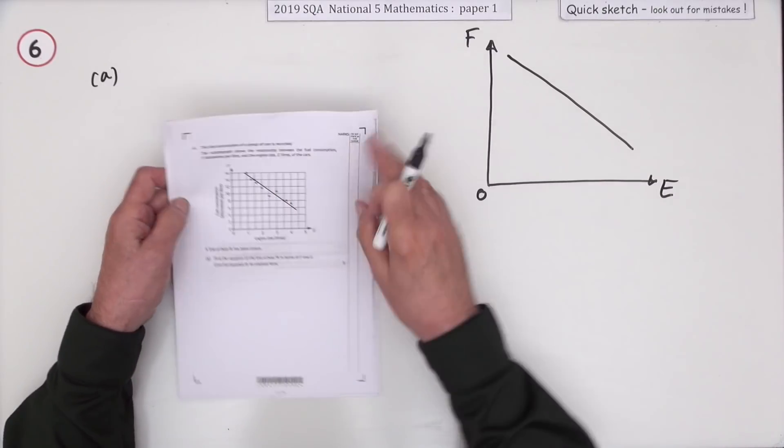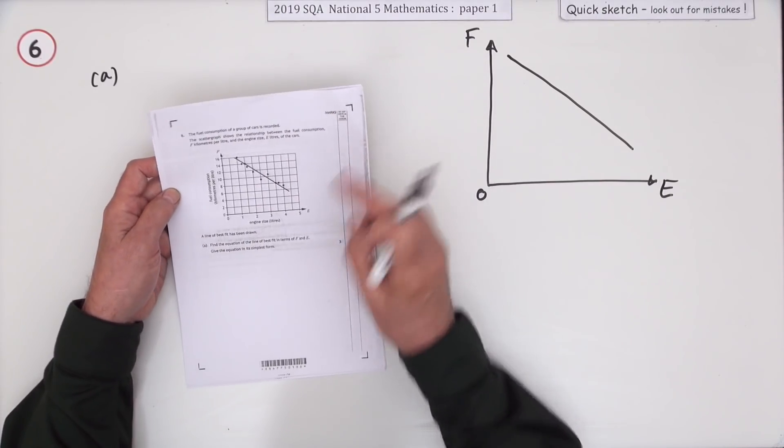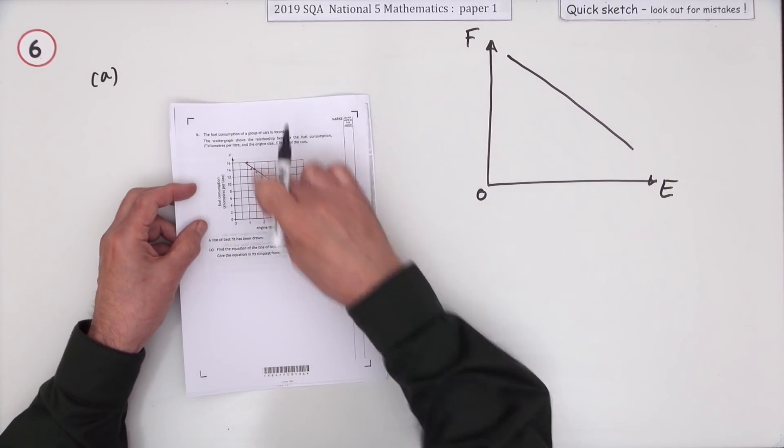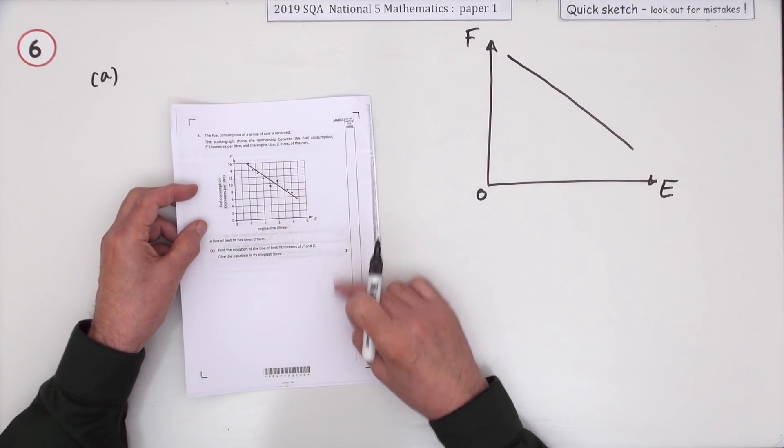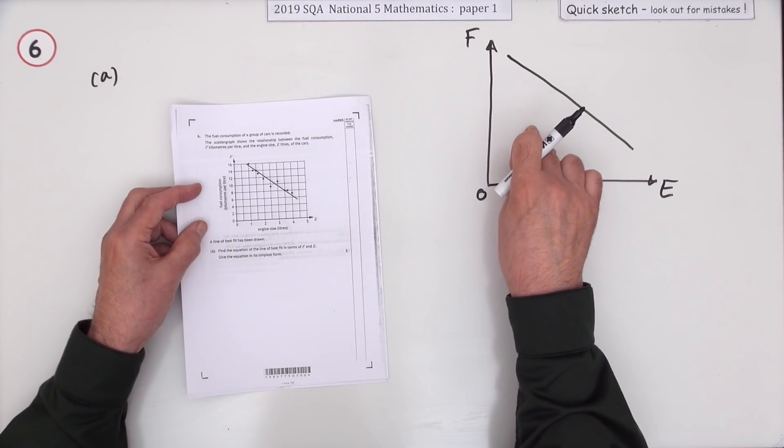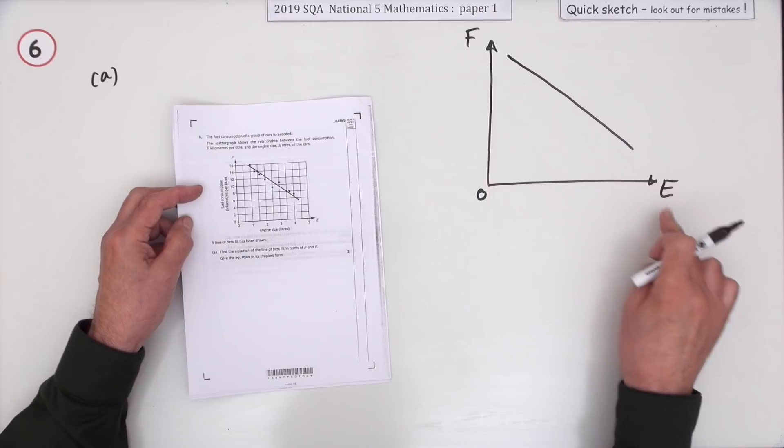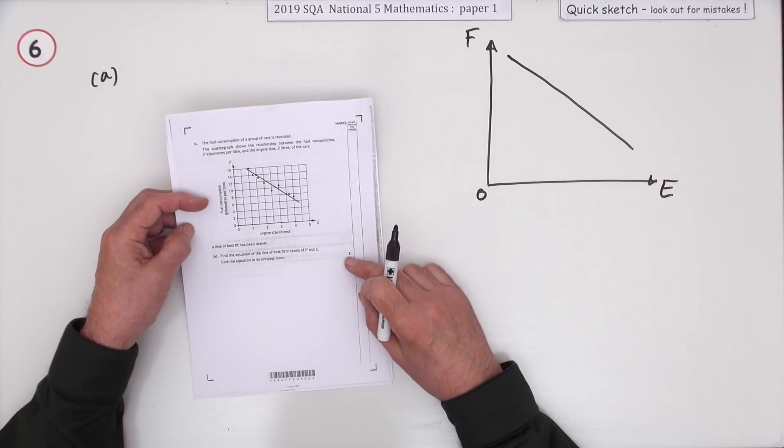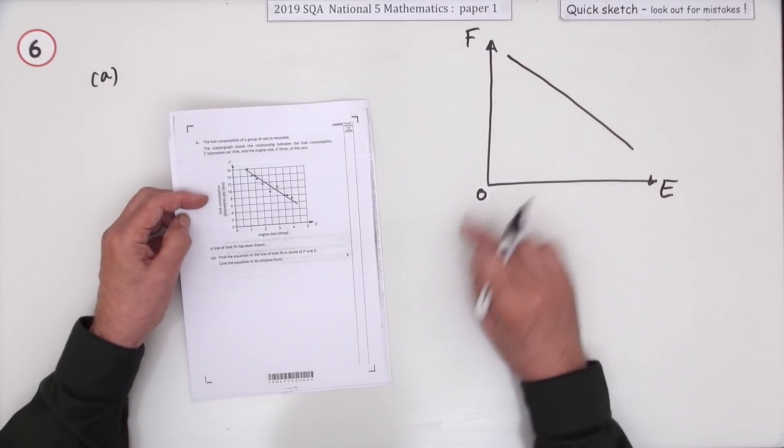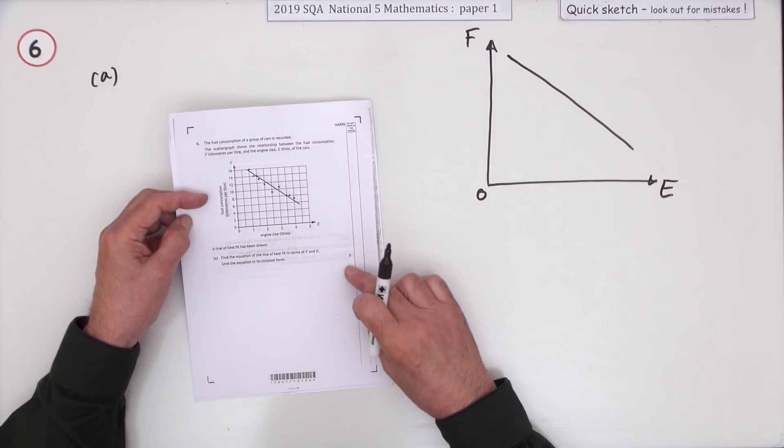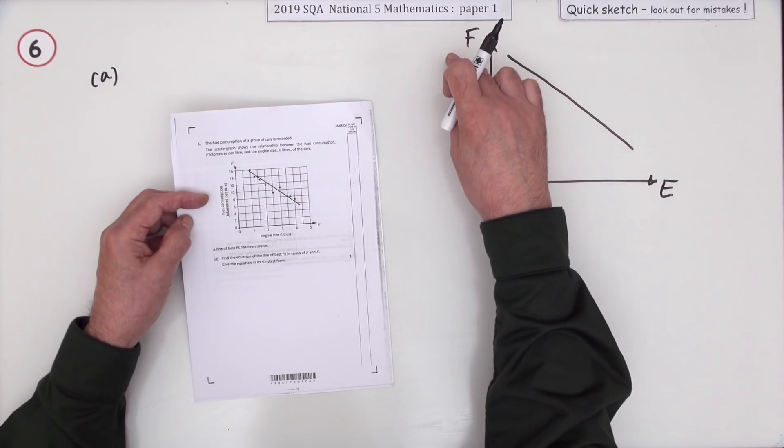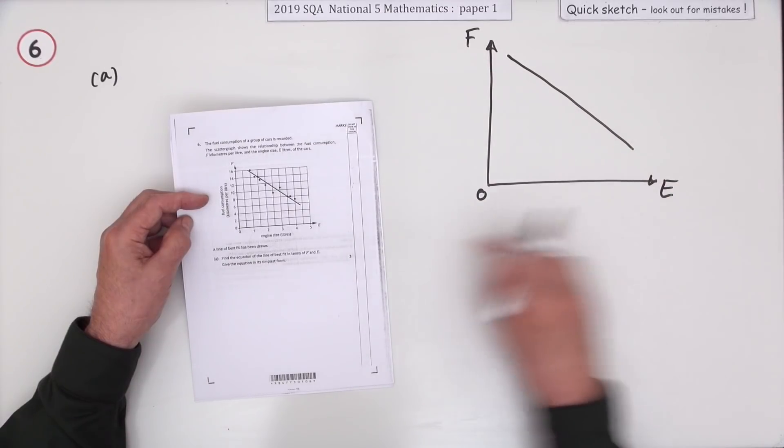So number six then, that's from paper 1 of the National 5. You've got this scatter diagram. I've not bothered copying it completely. You've got these scatters of points here. And it says, this diagram represents the fuel consumption against the engine size. Fuel consumption, engine size. A line of best fit has been drawn, so that's all I've drawn. You're defined for three marks, what's the equation of that line. The equation of the line of best fit to give F in terms of E.